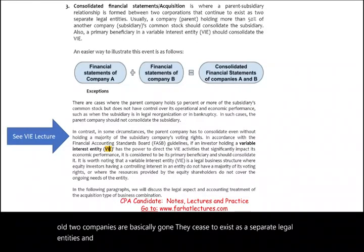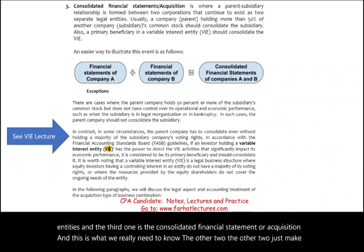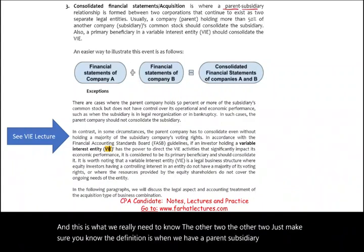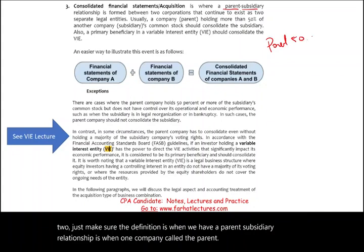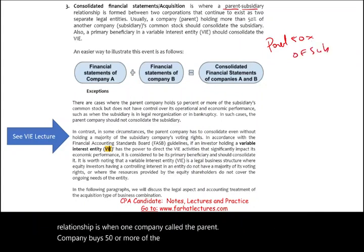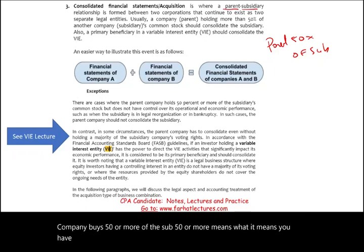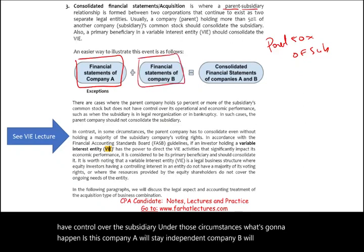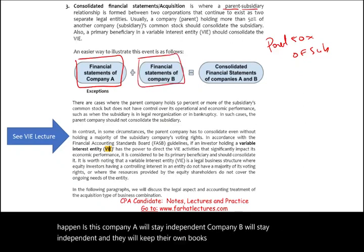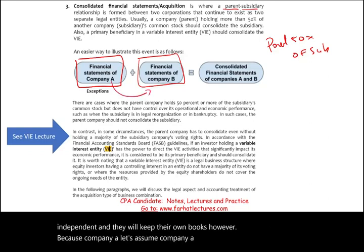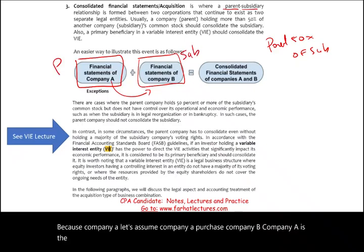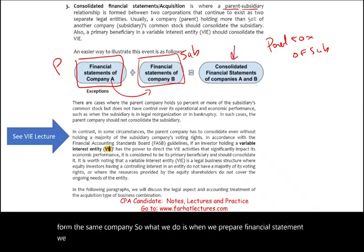The third type is the consolidated financial statement, or acquisition structure, and this is what we really need to focus on. This is when we have a parent-subsidiary relationship — when one company, called the parent, buys 50% or more of the subsidiary. Both companies stay independent and keep their own books, but because the parent controls the subsidiary, we prepare consolidated financial statements that show the financials of both A and B together.